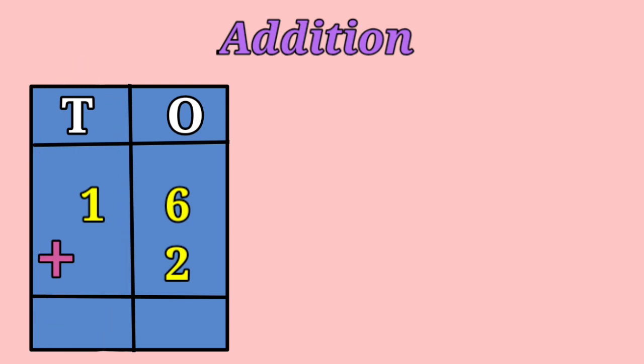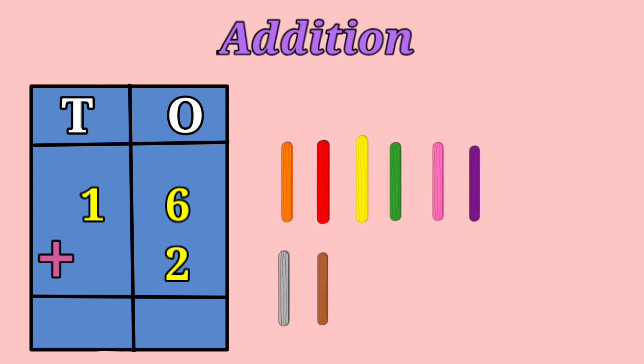So children, we will first start our addition from one's place. Now let's add 6 plus 2 by drawing 6 sticks. 1, 2, 3, 4, 5, 6 and 2 sticks. 1, 2. So all together we have 1, 2, 3, 4, 5, 6, 7, 8. 6 plus 2 is 8.